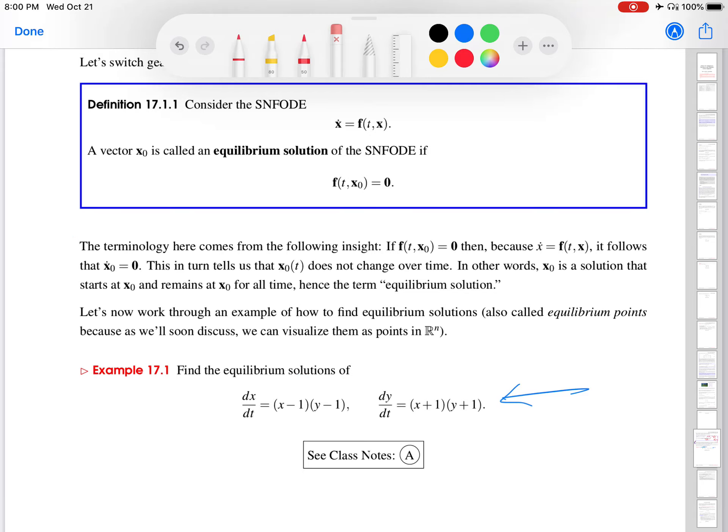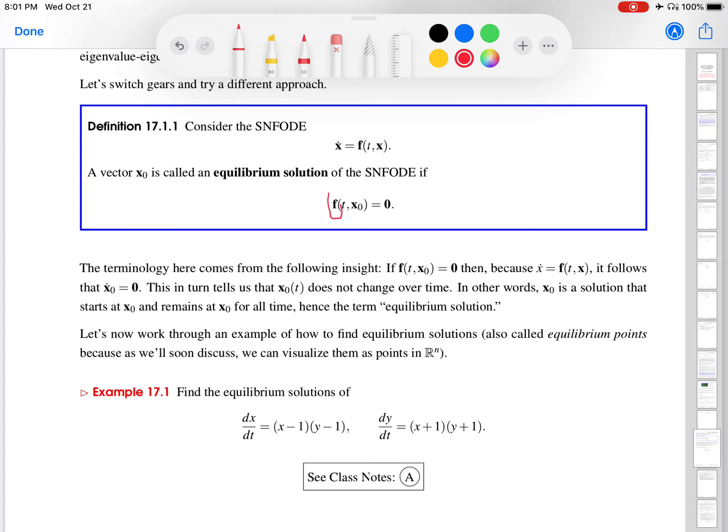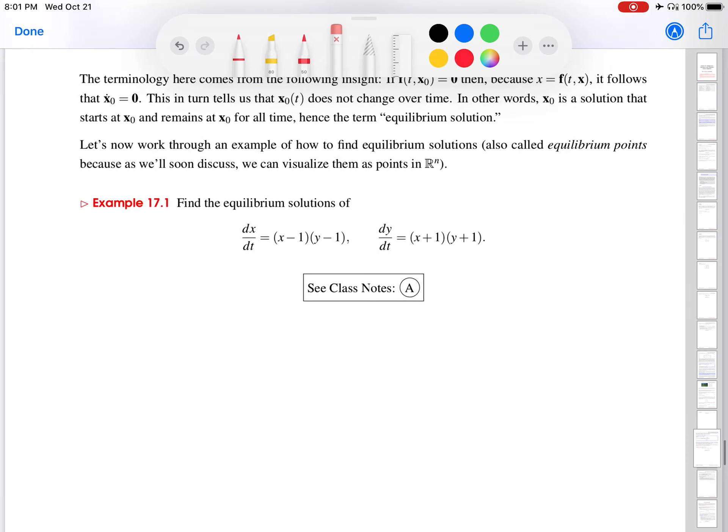Let's find the equilibrium solutions for this system. We're looking for X and Y values for which the right-hand side is zero, and it has to be zero simultaneously. If you go back to the definition, the entire vector, the entire right-hand side, has to be the zero vector, not just the first component, not just the second component.